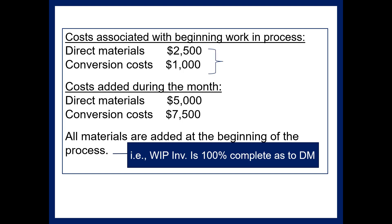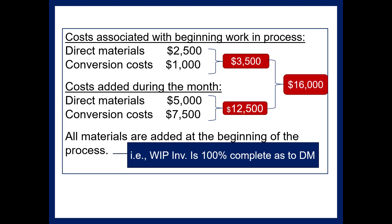Now it will be helpful to take a big-picture look at this before we start the computations. If you add the beginning costs up, we have $3,500 of beginning costs. Currently, we added $12,500, giving us $16,000 of total cost in this problem. Our goal is to allocate that among the partially completed units and the completed units — we cannot simply divide by 10,000 units because some are only partway finished.